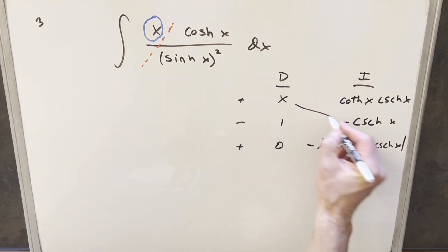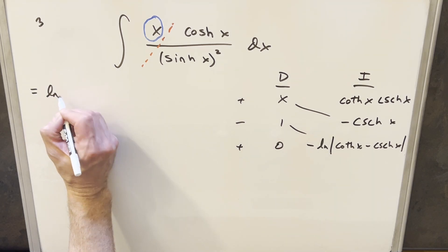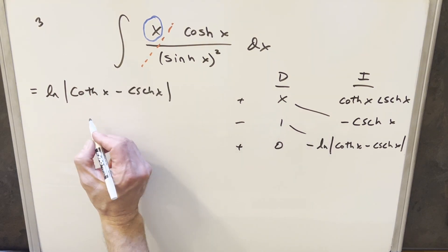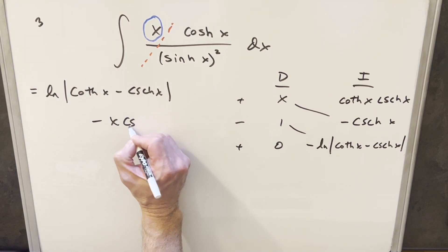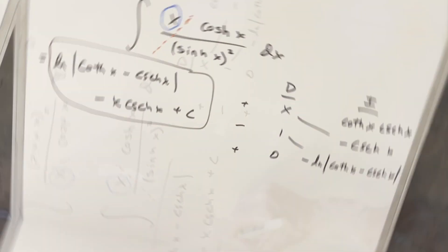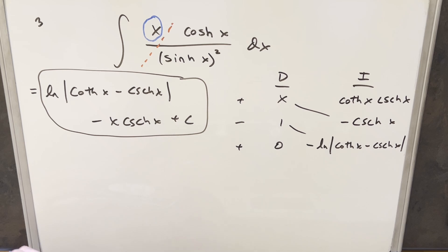So for our solution, we'll just copy down the diagonals. I'm going to go out of order because here, minus one times this minus is going to give me a plus. So I'm going to write this as natural log of all this stuff. And then we'll copy down this stuff. So we're going to have minus x hyperbolic cosecant x, add a plus C, and that's it.